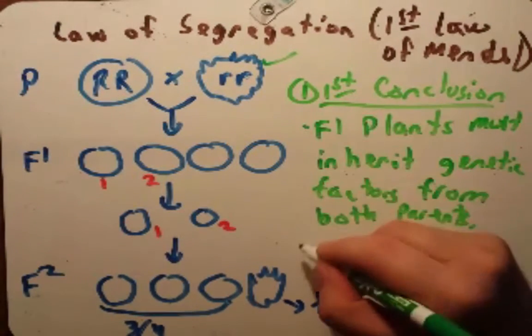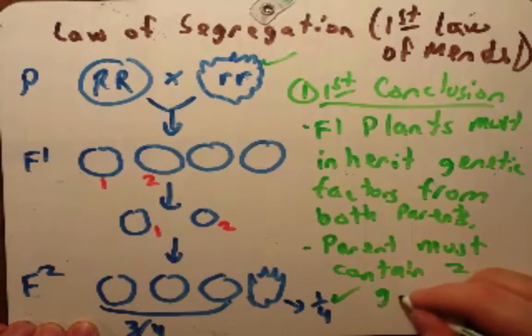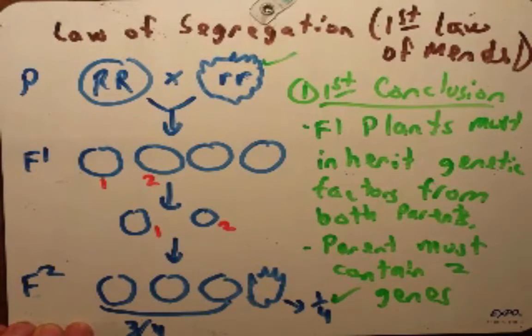He also concluded that the only way these numbers work out is that the parent must contain two of these characters. I'm going to put genes because that's what we're going to call them today. Mendel didn't know the term genes, he called them genetic characters or genetic principles. But he knew it had to have two of these. That's the only way these numbers work out.